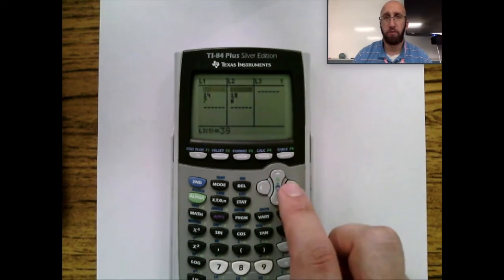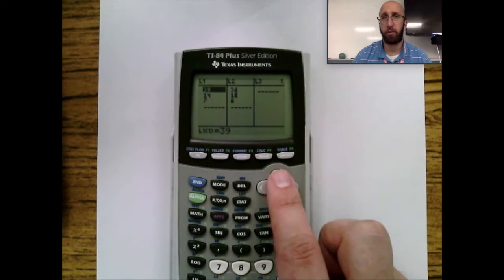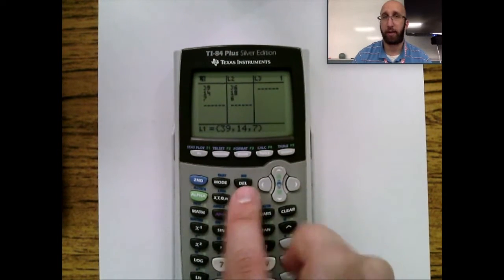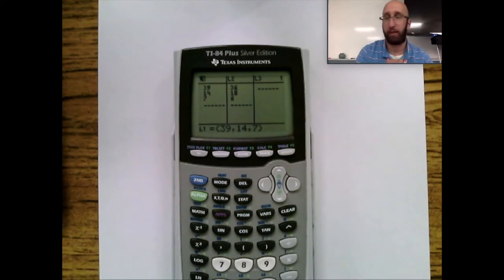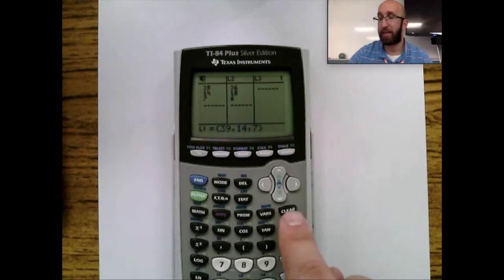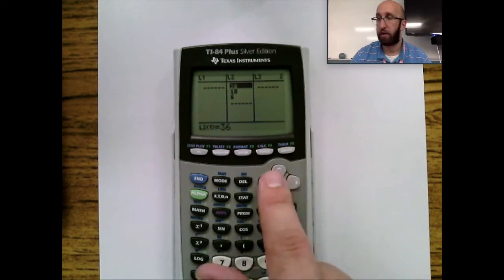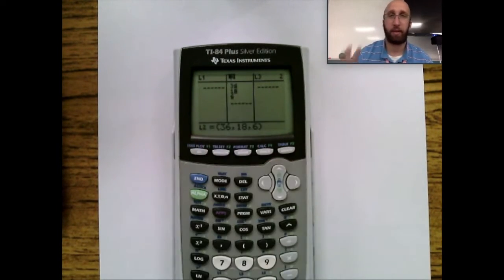Do not hit DELETE because it's going to completely remove that list. You're going to highlight that list and hit CLEAR and ENTER, and it will clear it out. Again, if you have data in there that needs to go away, so List 2 has data.